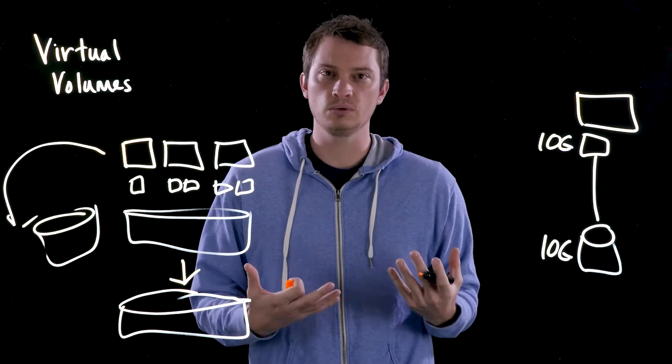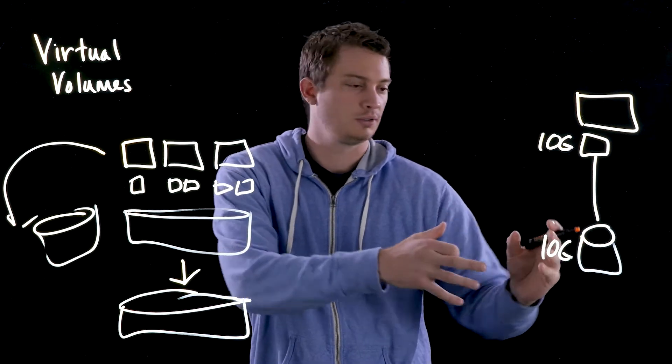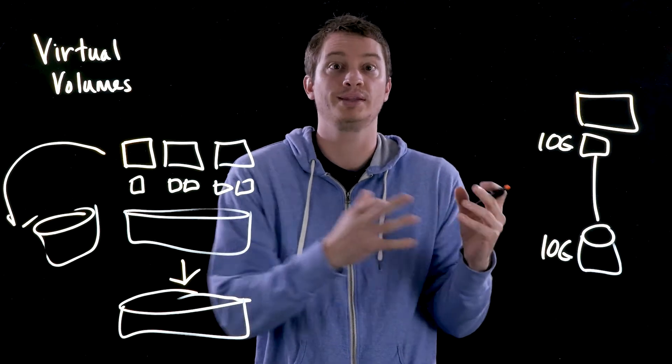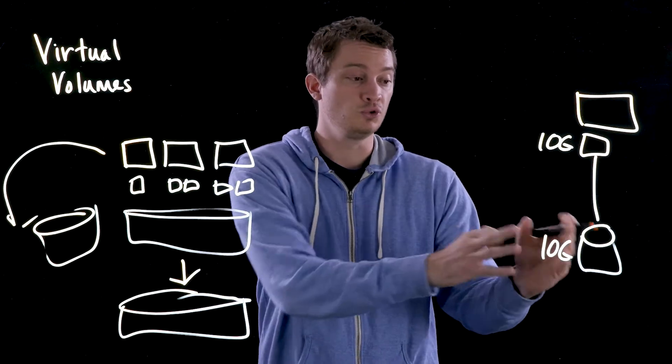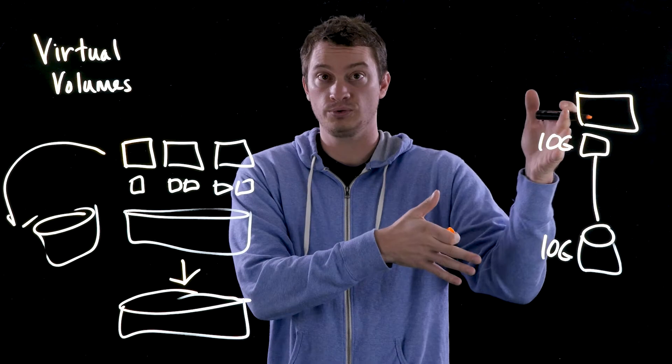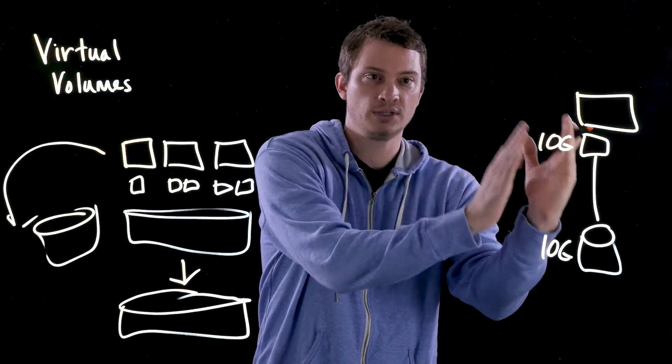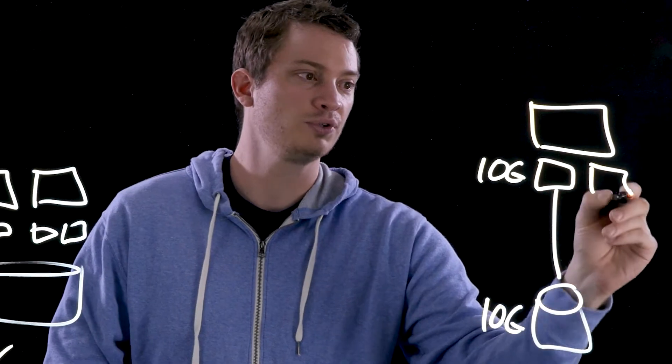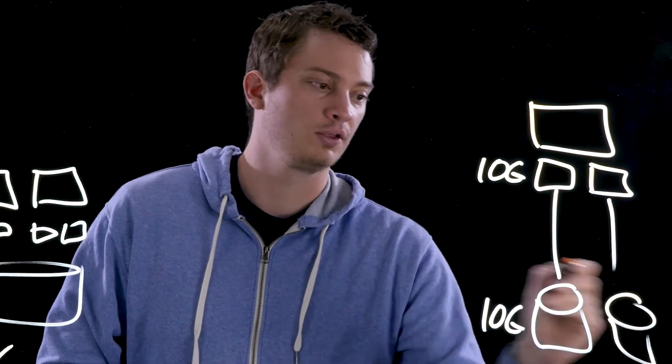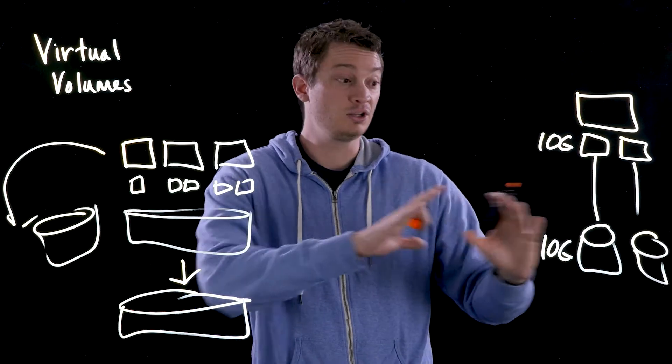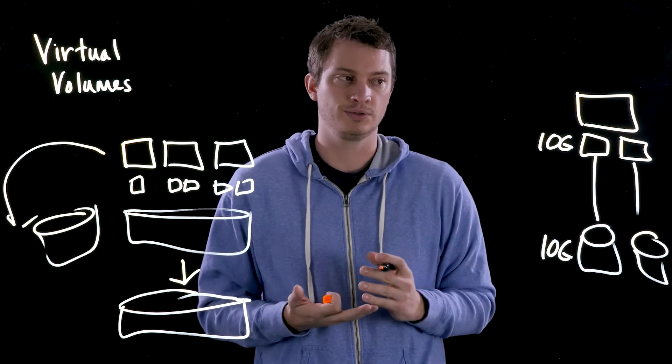So every virtual disk is actually an object on the array. So what this allows you to do is configure replication, snapshots, QoS, whatever the array allows you to do to a volume, to this volume, which is a virtual disk. So this not only gives you VM granularity, it gives you virtual disk granularity. If you have two virtual disks, you have two volumes. And so you can independently configure them or configure them the same way, whatever you're trying to do.